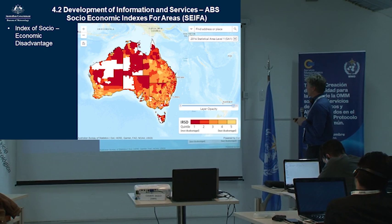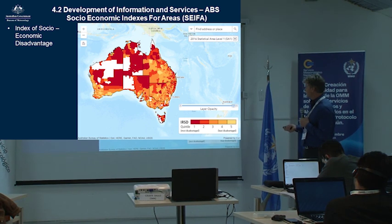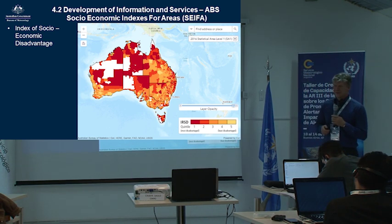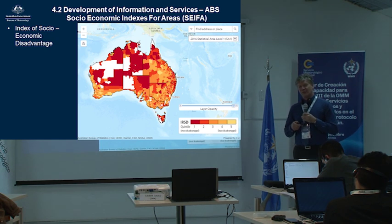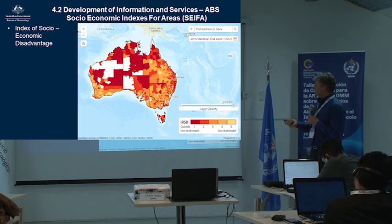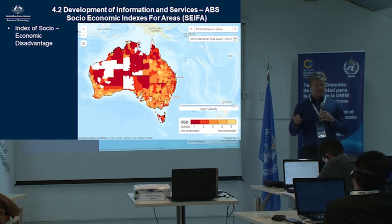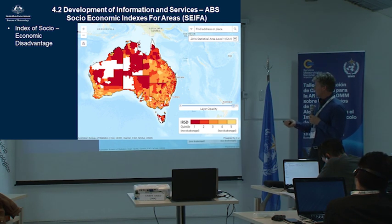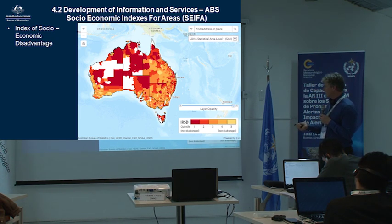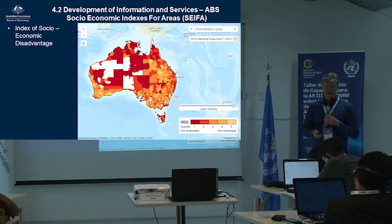That's what the product looks like — the socio-economic index for disadvantage. Straight away you can see there are data gaps. I'd be very surprised if there's anyone in the audience who's had a go at collecting impact data that hasn't found gaps. Where we've got low population density there's not enough statistical information to make a reliable index, so we don't produce one. You can see that in heavily rural areas people are a lot more disadvantaged than in capital cities.